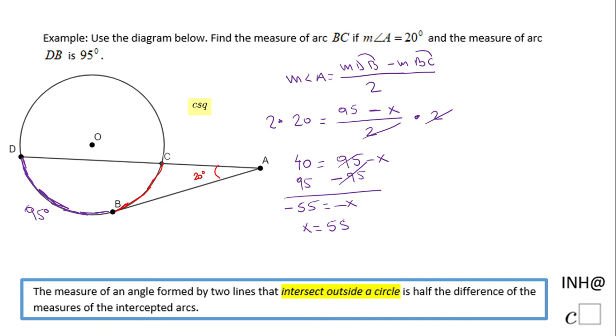And don't forget the X in our case is the measure of arc BC. So the measure of arc BC is 55 degrees. If you enjoyed this video, don't forget to click the like button and come back on C square for more help. Thank you.